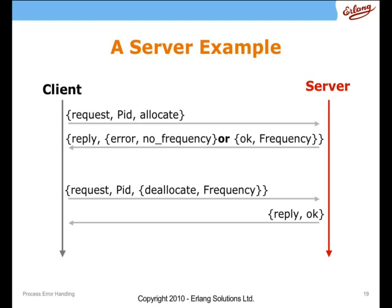is either the tuple OK frequency or the tuple error, no frequency. And then subsequently what we might see is a request, again from the same client PID to the server saying, could you please deallocate the frequency I've got? And there's a reply from the server saying, OK, so there we see the pattern of messages, the flow of messages between the client and the server,